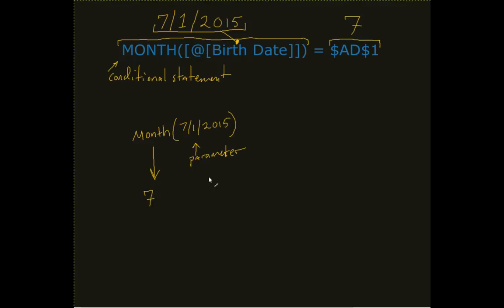Then what we do is look and see on the other side of that equal sign: does 7 equal 7? If it does, this is regarded as true.